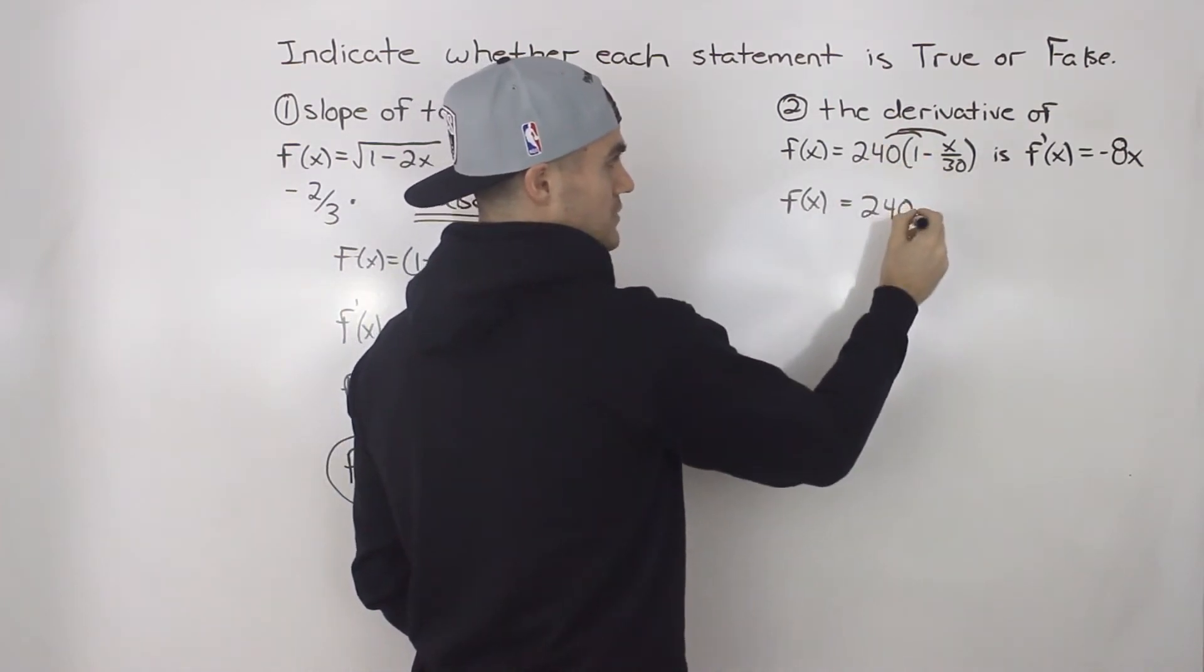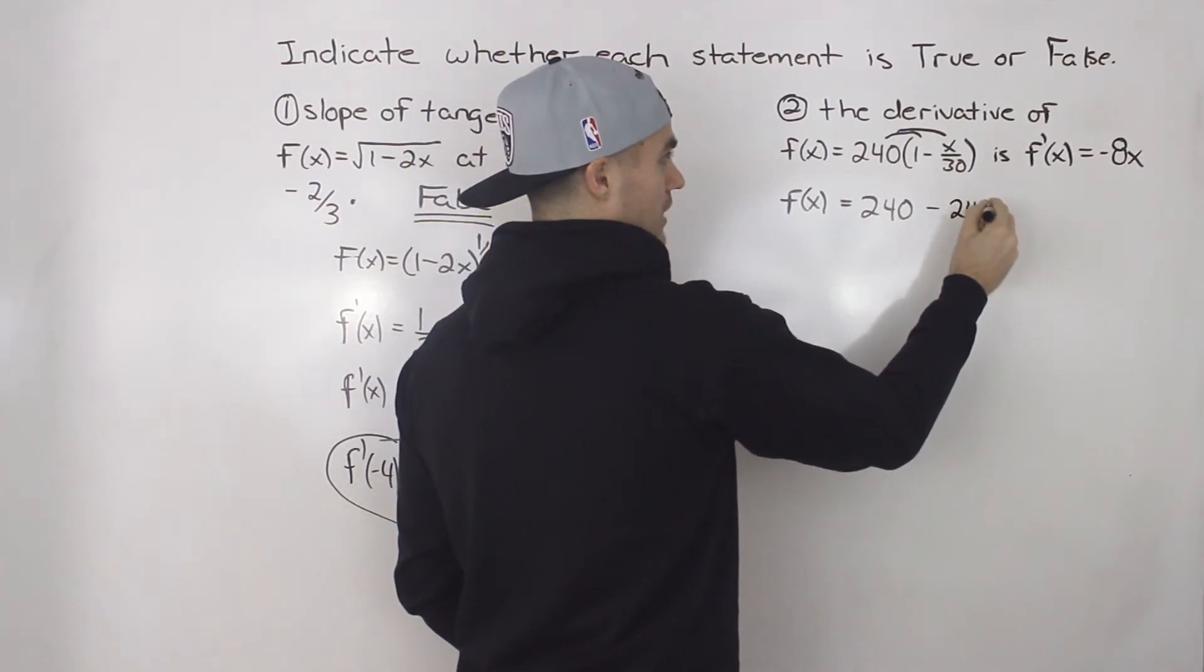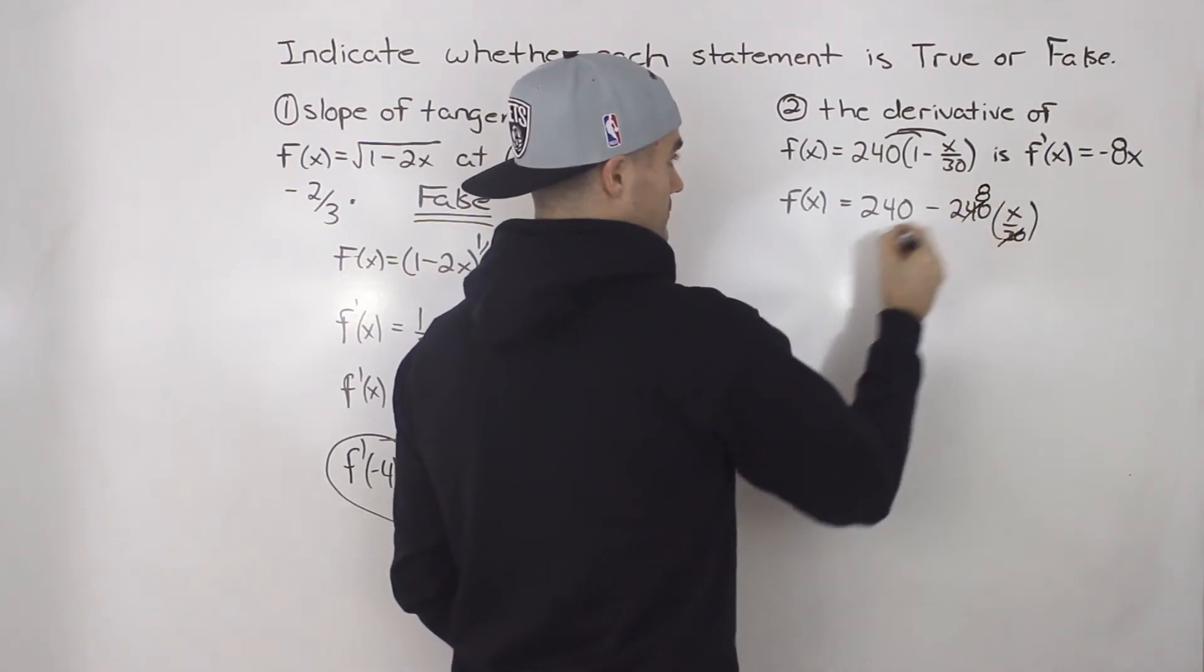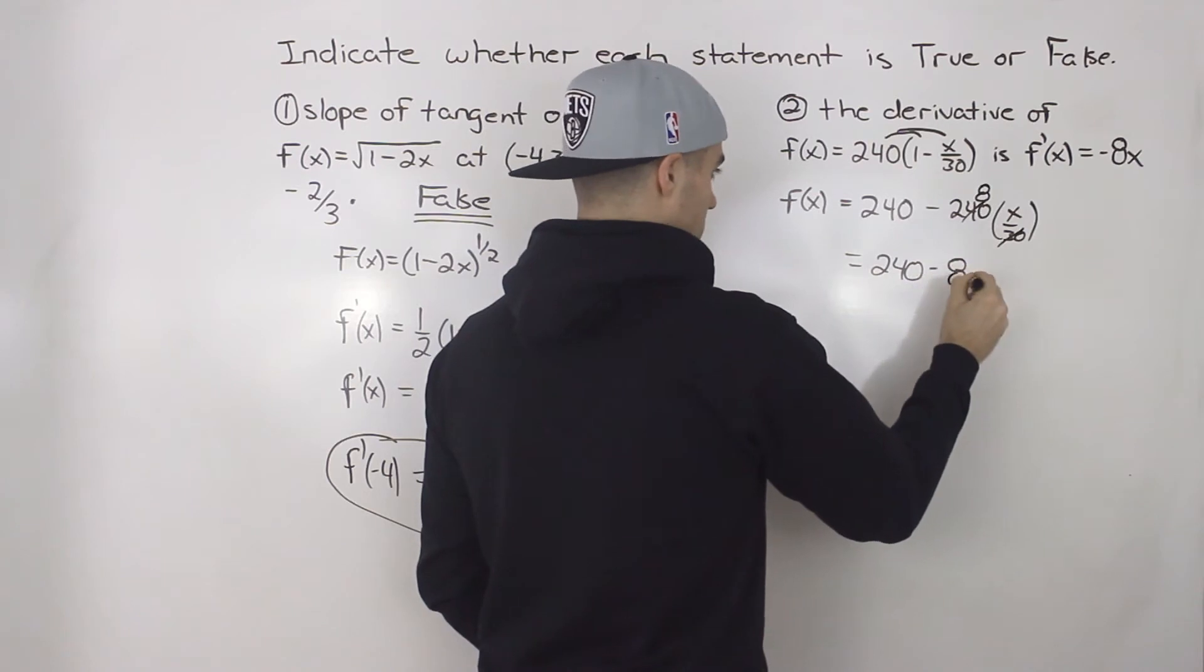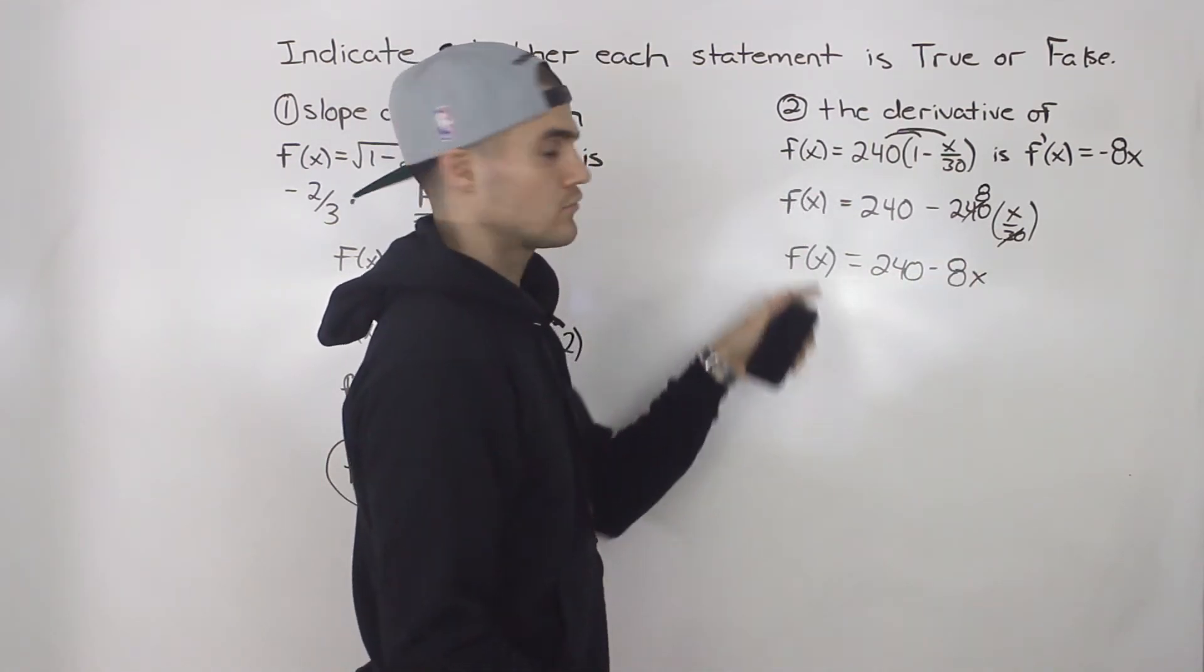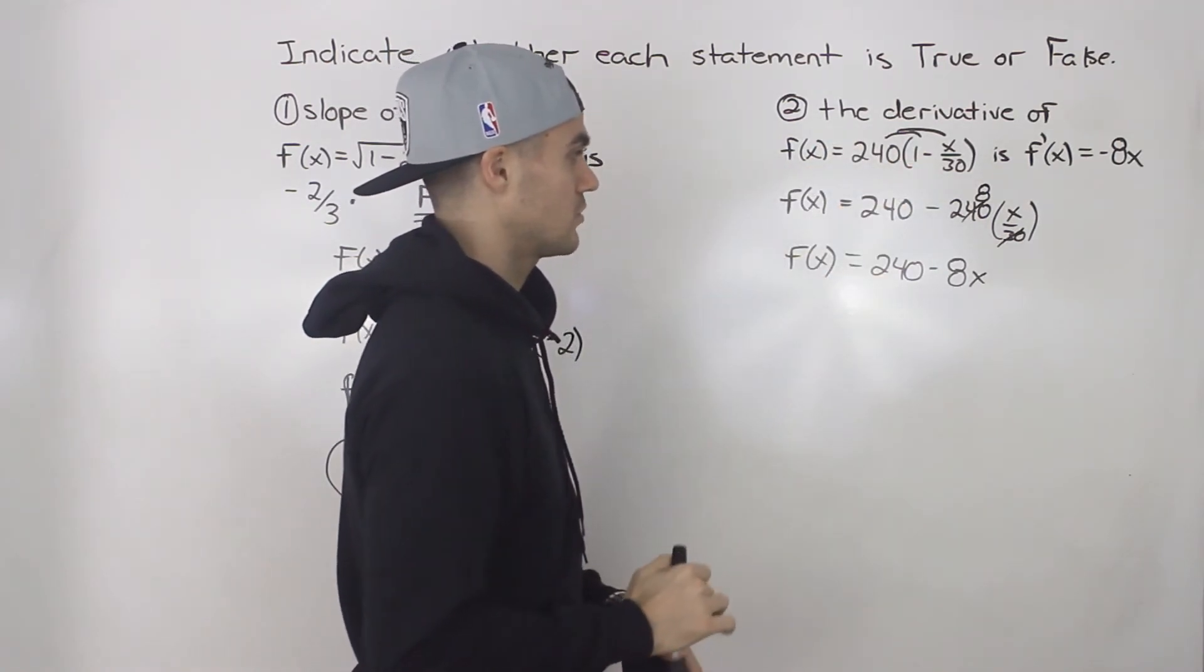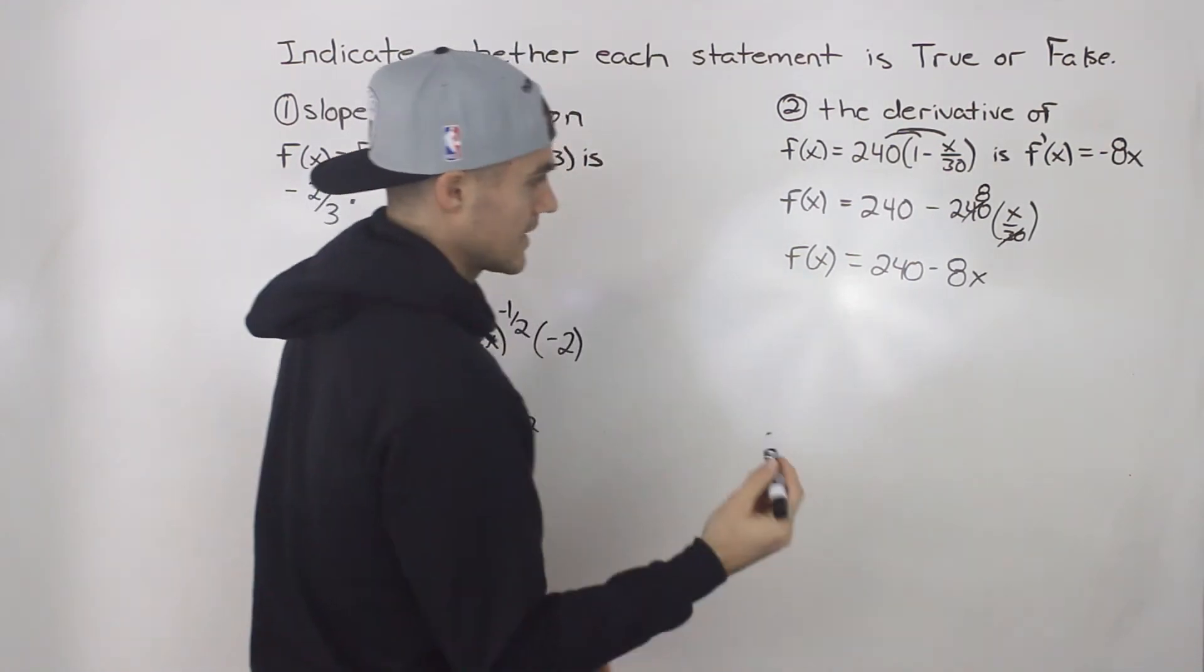So 240 times 1 is 240. And then we would have 240 times x/30. Well, notice how 30 goes into 240 eight times. So we'll have 240 - 8x. And remember, this is still the function. We still haven't taken the derivative. We're just manipulating the function first in order to make that differentiation process a little smoother.